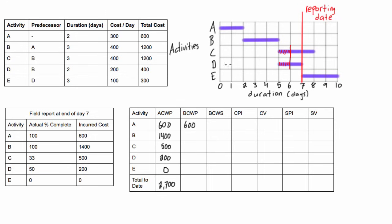Activity B is also 100% complete and we budgeted $1,200 for it, so BCWP is $1,200. Activity C is 33% complete and we expected the total cost to be $1,200, or $400 per day. Since we only completed one day's worth of work, the budgeted cost of the work performed is $400.